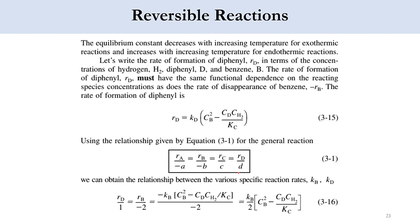For exothermic systems, the equilibrium constant decreases with increasing temperature; for endothermic systems it increases. Now we need to find the rate of reaction for diphenyl (D). Using the same principles, we can derive: R_D = K_D · [C_B² - C_D · C_{H₂} / K_C].